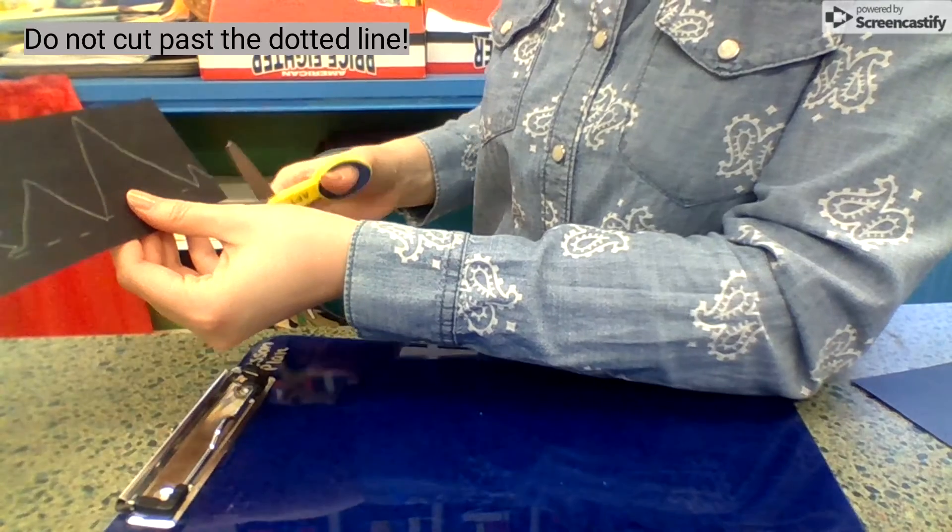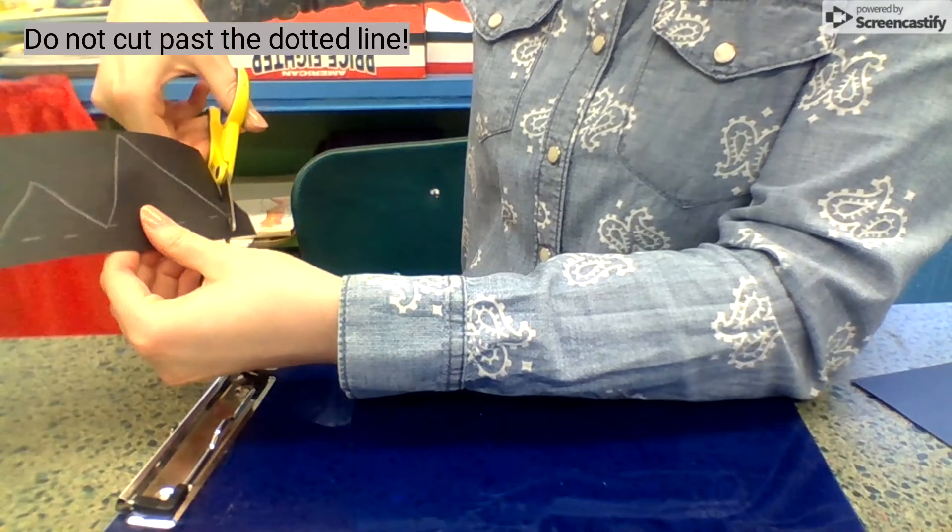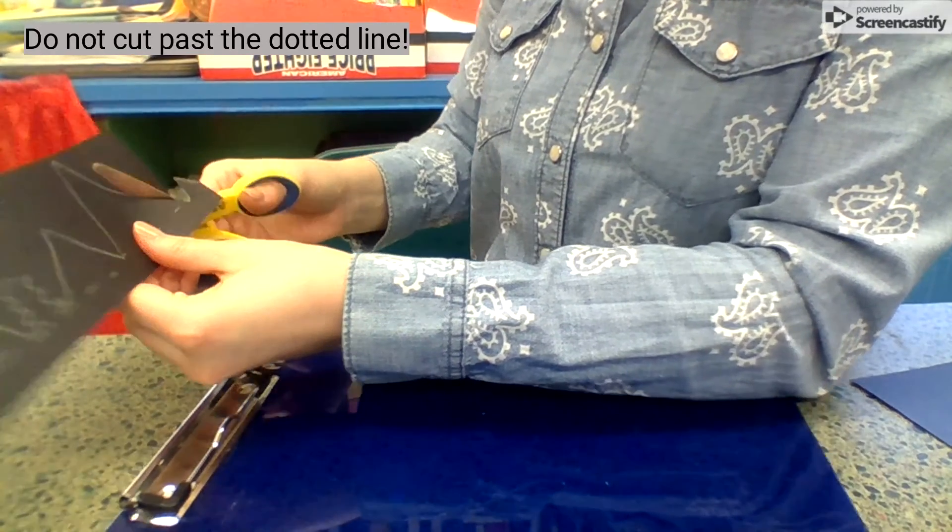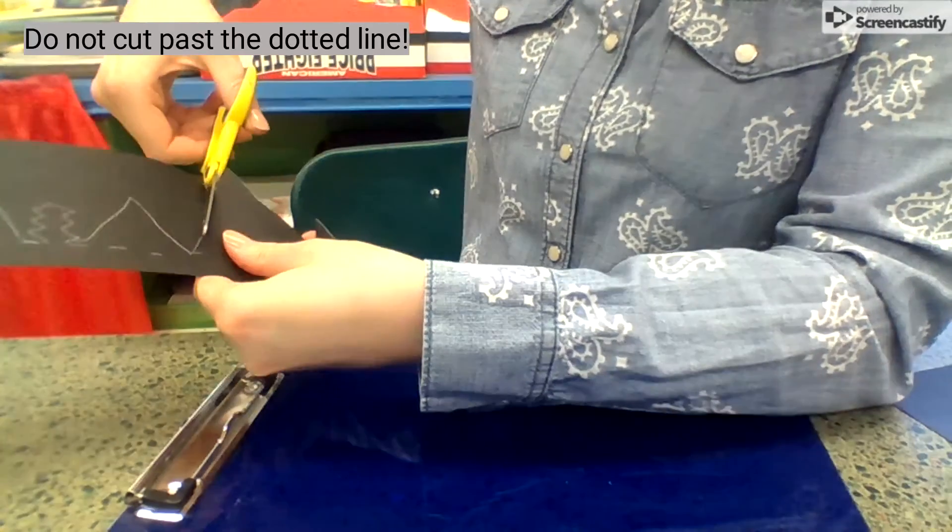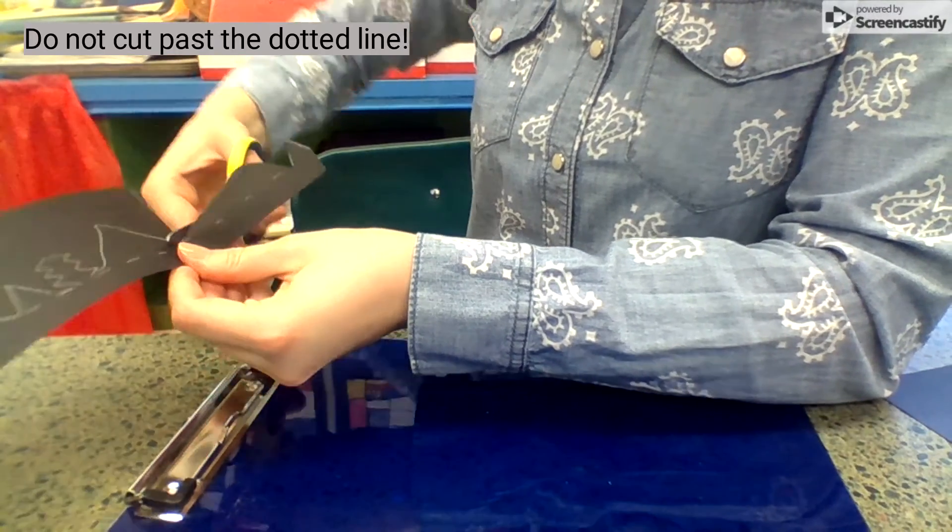When I cut, I'm going to start by cutting out my pencil lines. But when I get to the dotted line, I'm going to stop. I'm going to go back up, cut my mountain, go back down. When I get to the dotted line, I stop. I turn around.